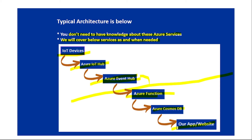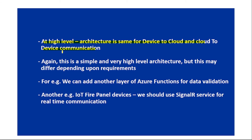For cloud-to-device communication, we start from our app or website, then invoke an Azure Function. From the Azure Function, we connect to Azure IoT Hub, and Azure IoT Hub sends the message to IoT devices or invokes the direct method on the IoT devices. So at a high level, the architecture is still the same.